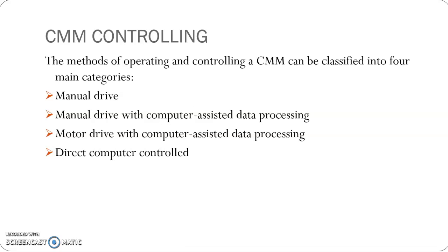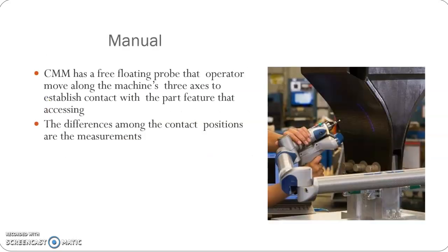The CMM controlling includes manual drive, that is purely manual drive; manual drive with computer-assisted data processing; motor drive with computer-assisted data processing; and direct computer controlled or DCC. The manual control system is the simplest one. It uses a free-floating probe that can be controlled manually by the operator's arms. The probes move from one location to another manually, and the difference among contact positions are the measurements.